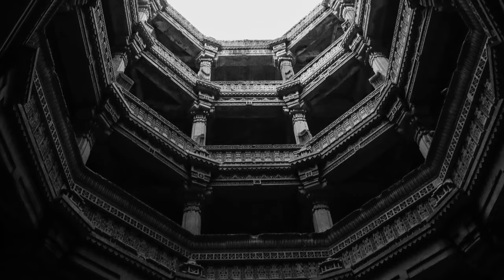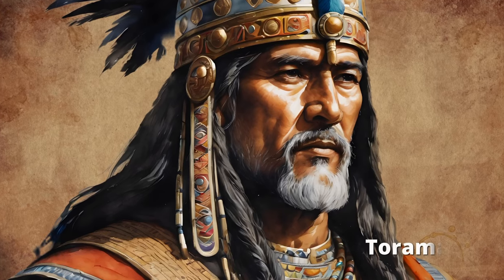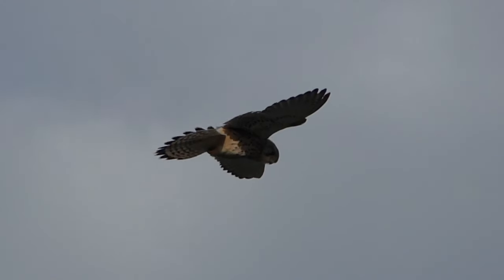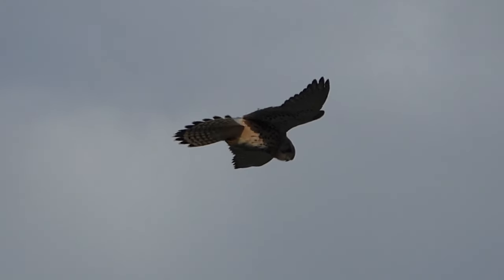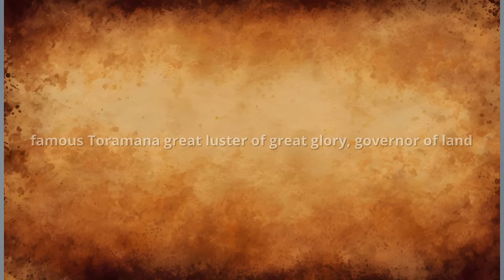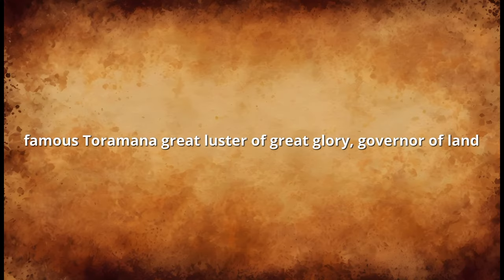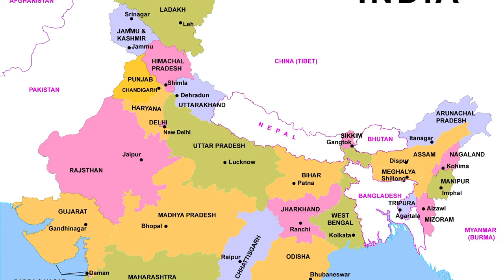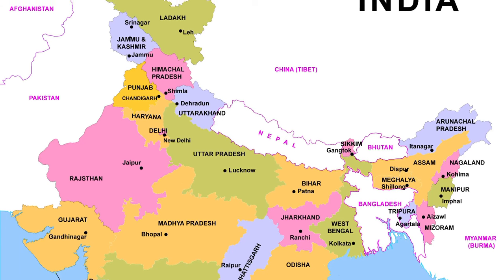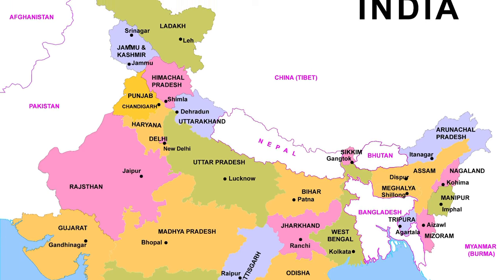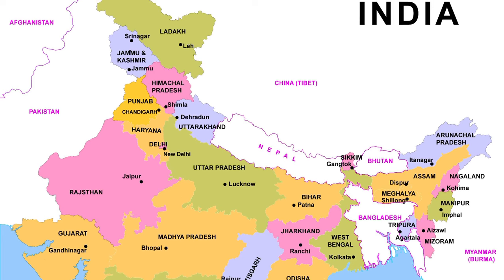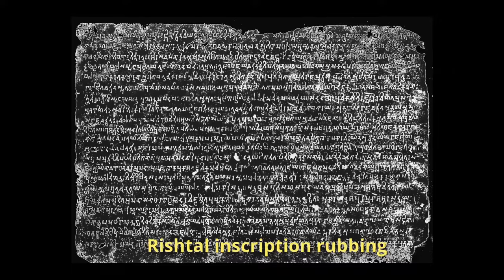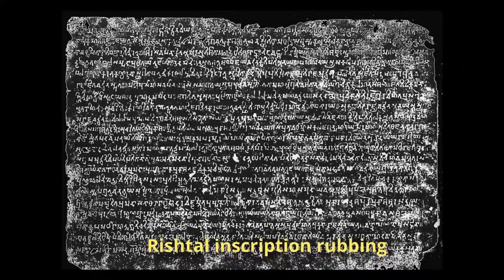At the end of the 5th century AD, the Alkans were led by King Toramana. In the Raja Tarangini, his name was Vasukula, and he also had a title meaning Falcon. An Indian inscription about him reads: 'Famous Toramana, Great Luster of Great Glory, Governor of Land.' Toramana ruled in parts of present-day Uttar Pradesh, Madhya Pradesh, Gujarat, Rajasthan, Punjab, and Kashmir. His expansion to the west was stopped by the Alikaras around Mansoor, as documented by the Ristal stone slab inscription of Prakashadharma Alikara.